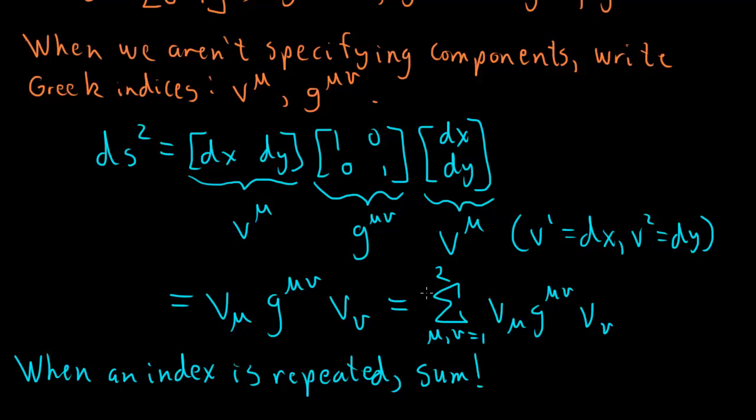So when you see two indices, mu and the nu, the same, appearing in a certain term, then that means it's actually a sum over those indices. So let's practice this.